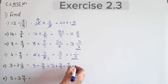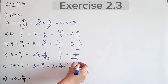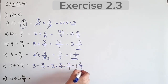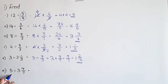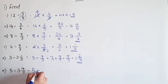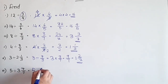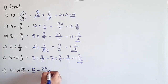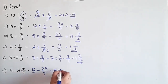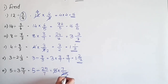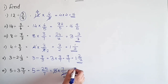9 by 7 gives 1 remainder 2, so the answer is 1 and 2/7. Next question: 5 divided by 3 4/7. Mixed fraction: 7 into 3 is 21, plus 4 is 25, so 25/7. Reciprocal of 25/7 is 7/25. We get 5 times 7/25, simplifying to 7/5.